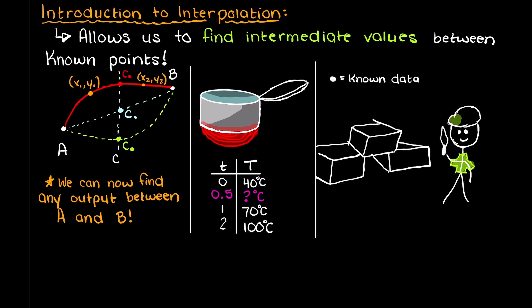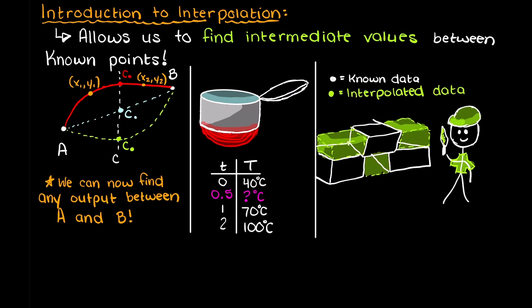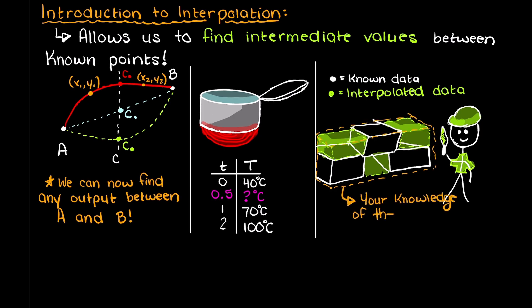In theory, we could go through and track the temperature of our pot of water at every single time point from 0 to infinity. However, this is time consuming, tedious, and not to mention impossible. Therefore, we track enough points to fully understand our system the best we can, and we use interpolation when necessary to fill in the blanks.